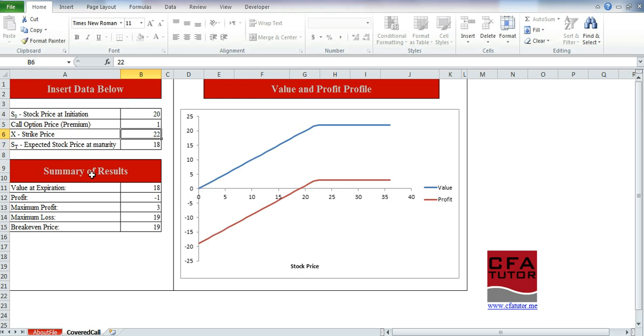you will find the summary of results here which shows you the value at expiration, the profit, maximum profit, maximum loss, and the breakeven price. And this is the graph that shows you the value and profit at different stock prices,